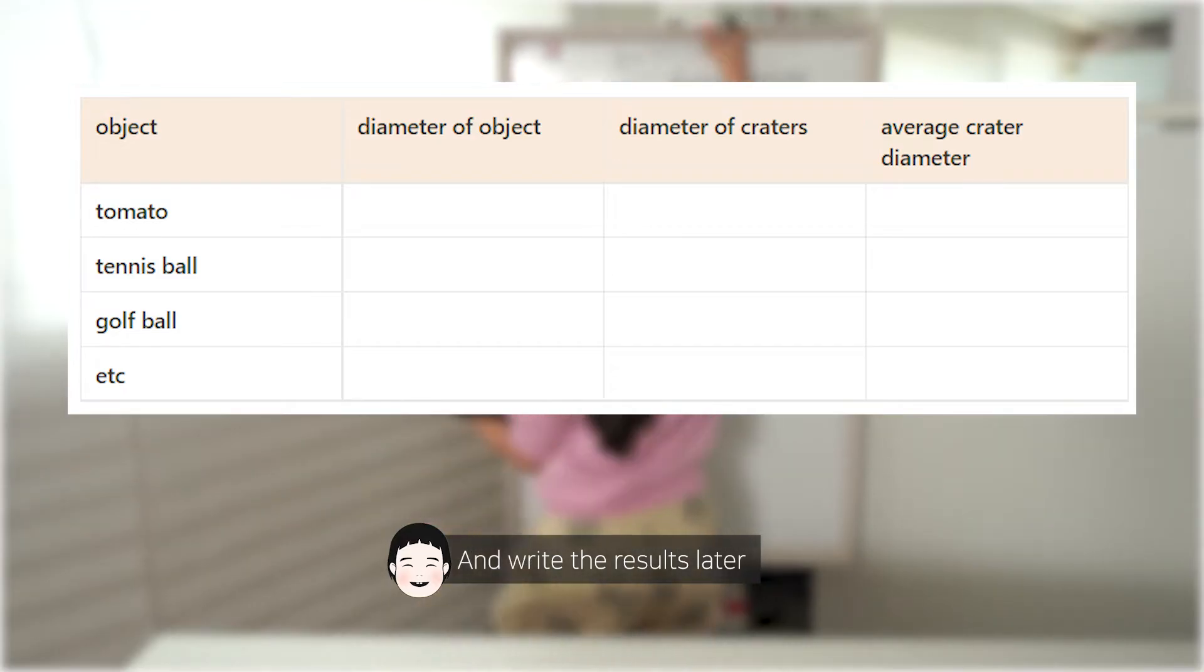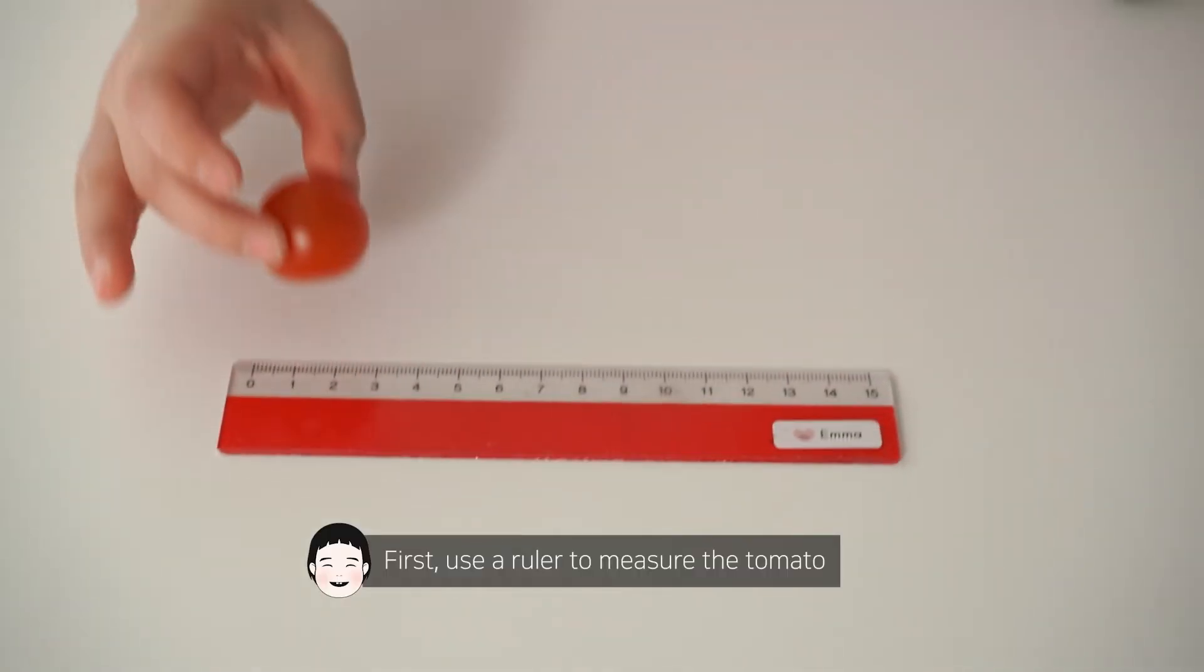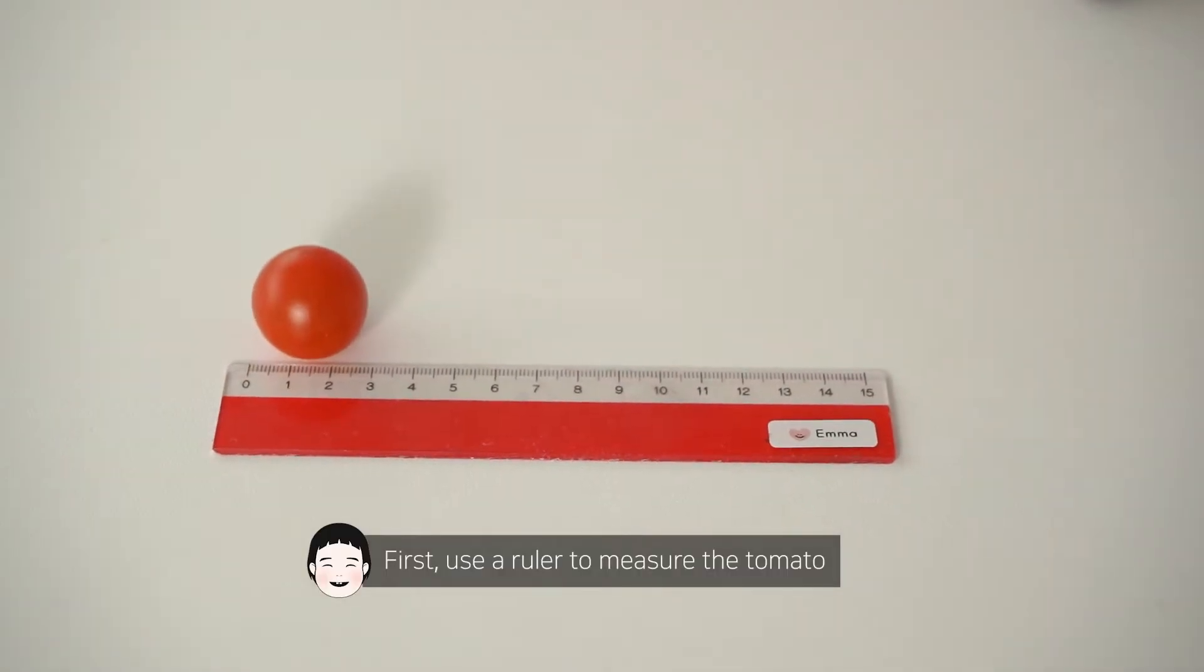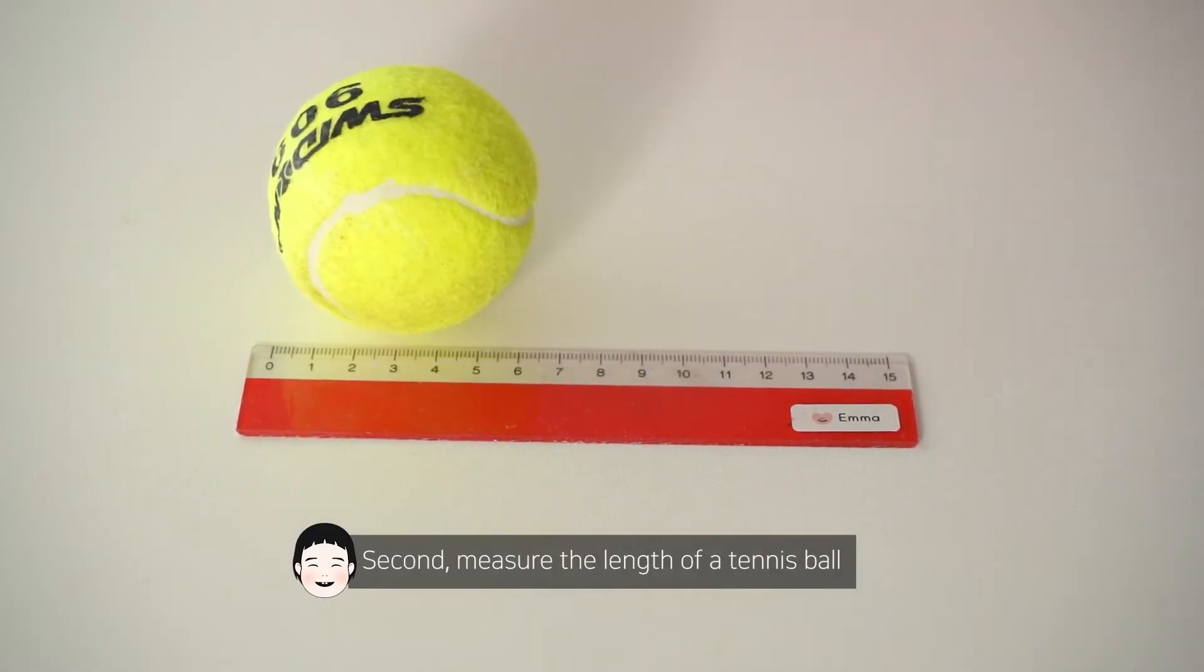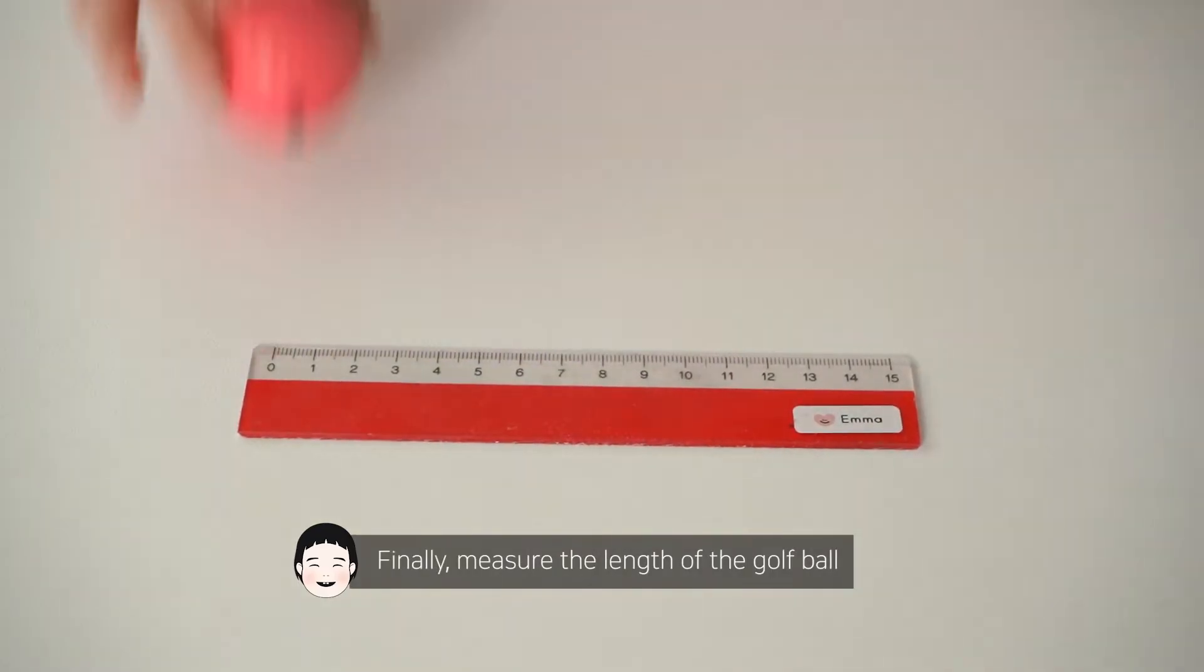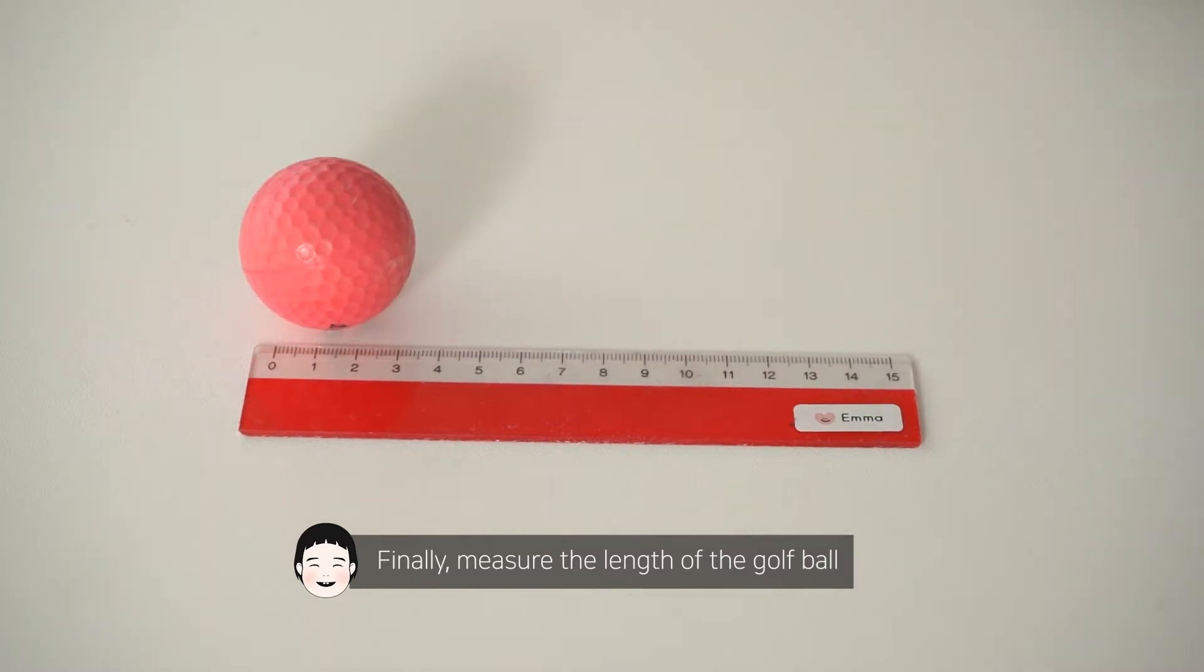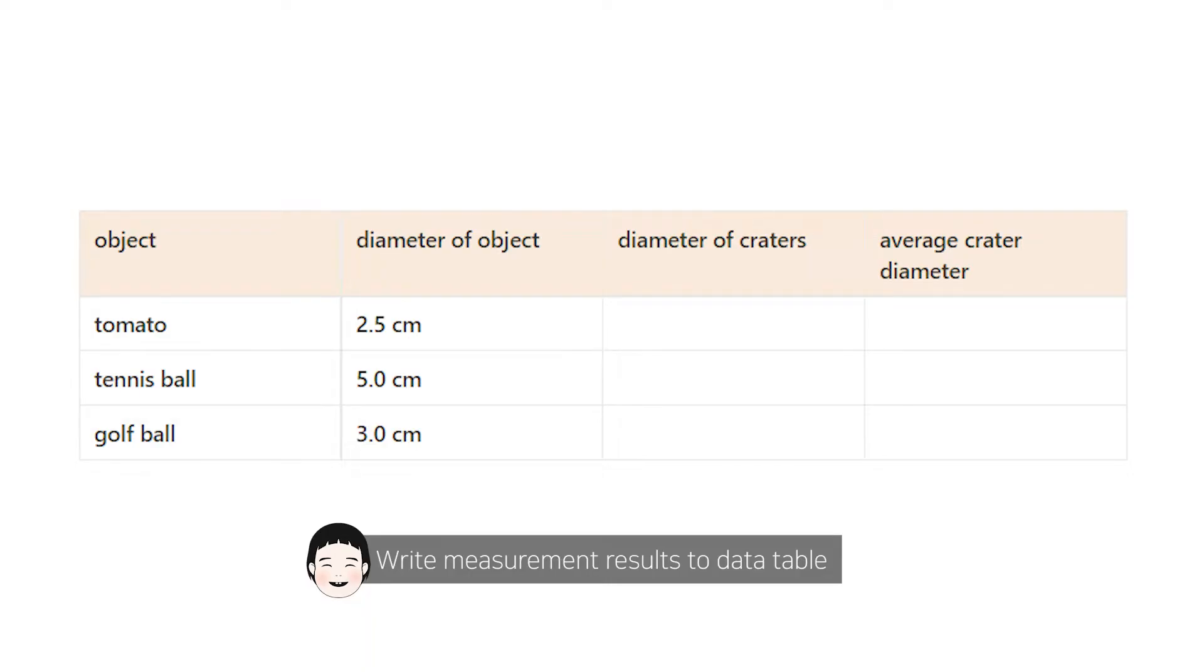First, use a ruler to measure the tomato. Second, measure the length of the tennis ball. Finally, measure the length of the golf ball. Write the measurement results to the data table.